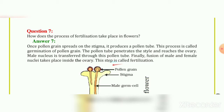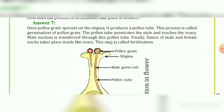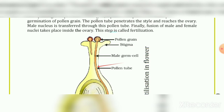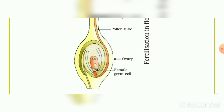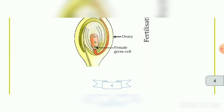The figure shows fertilization in a flower. In the figure you can see: pollen grain, stigma, male germ cell, pollen tube, ovary, and female germ cell - these are the labelled parts of fertilization in a flower.